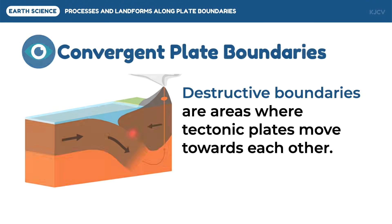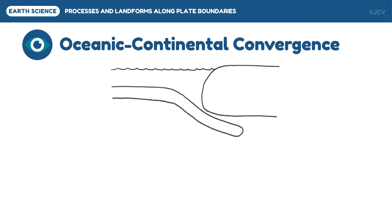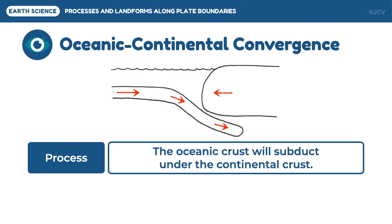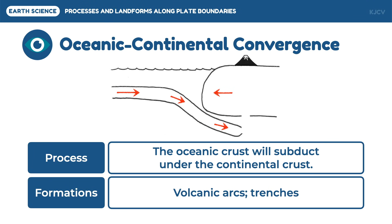The first one is the oceanic-continental convergence. In this type of plate boundary, the oceanic and the continental crust collide. The oceanic crust will subduct under the continental crust because it is denser. The subducted oceanic crust will then melt because of the heat from the mantle and the friction of the collision. Once magma accumulates in the melted region, pressure will build up forming a volcanic arc above.